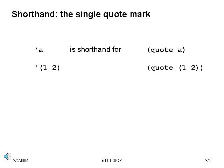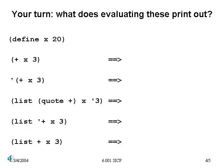Thus, quote mark A is just a shorthand for (quote A), and quote mark (1 2) is just a shorthand notation for (quote 1 2), which creates for us a list consisting of the number 1 and the number 2. This means in general that placing a single quote mark in front of the printed representation for any list structure will cause the evaluator to create the corresponding list structure.